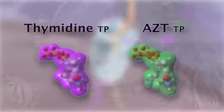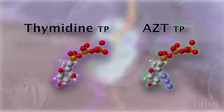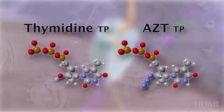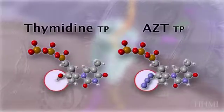Here it's shown next to a thymidine molecule, one of the four nucleotide bases: A, T, C and G. AZT is very similar to thymidine.